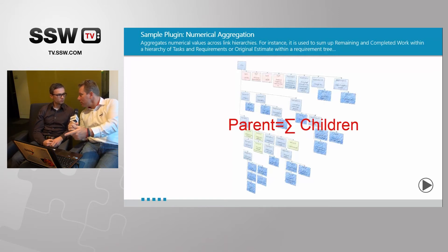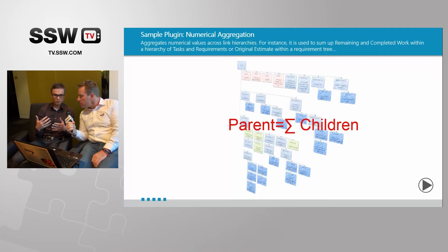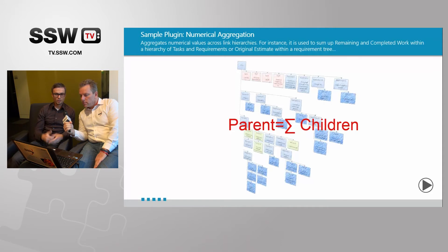Are you surprised the TFS team haven't done this already? Yeah, it turned out to be quite complicated to implement. You could hook up the iSubscriber event yourself, but they did a lot of work to support all the linking changes. If you drag and drop tasks to another requirement, you have to redo the aggregation — it's not just changing values, it's also changing the complete hierarchy structure. It was difficult, but it's a proven solution with existing customers.